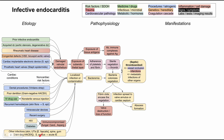It's worth noting that Staph aureus is a particularly common and aggressive organism for this condition. It usually leads to acute infective endocarditis, where the patient has symptoms very quickly and oftentimes they are very severe. Staph aureus has a very rapid pathophysiology and leads to quick manifestations. Additionally, men tend to get endocarditis more than women, and older people above age 60 are also more commonly affected.